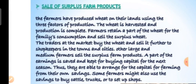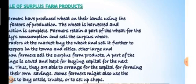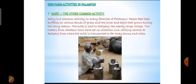Traders at the market buy the wheat and sell it further to shopkeepers in towns and cities. Large and medium farmers sell surplus farm products; a part of the earnings is saved for buying capital for the next season — such as cattle, trucks, shops, tractors, threshers, and combine machines.